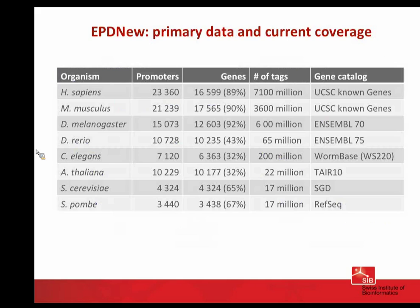These are the current totals: we cover eight species — two vertebrates, three invertebrates, one plant, and two fungi. For the vertebrate species, coverage is almost complete in terms of genes, based on a large number of CAGE tags — seven billion CAGE tags, which is an impressive volume. For other organisms, we have less good coverage and lower gene coverage; for instance, for Arabidopsis we have only 32%.